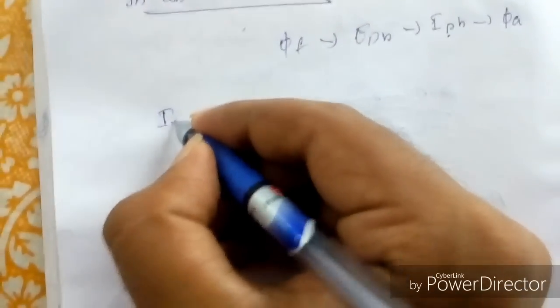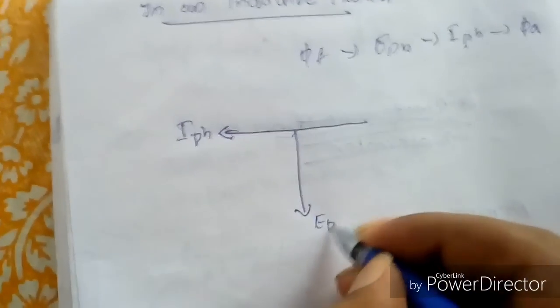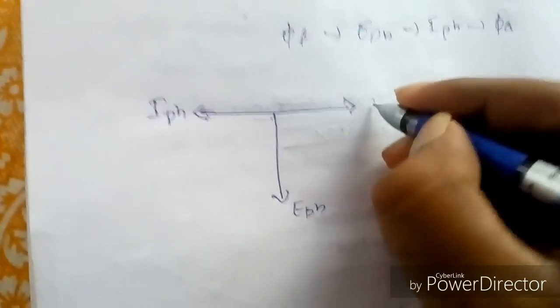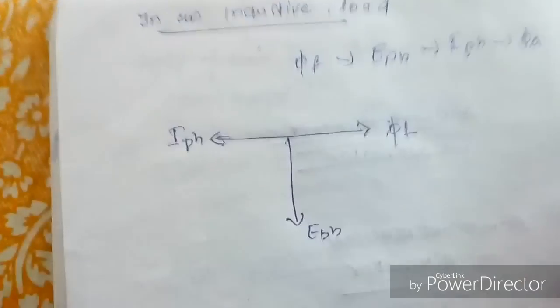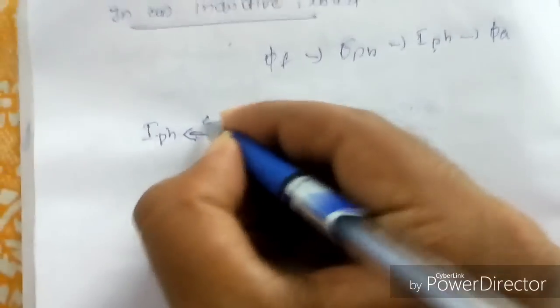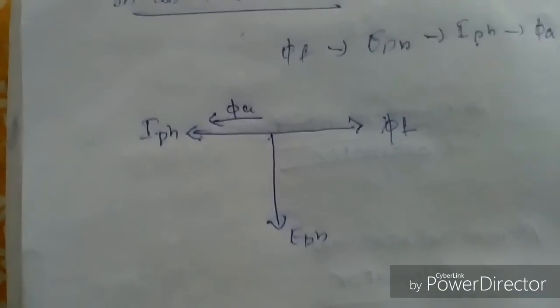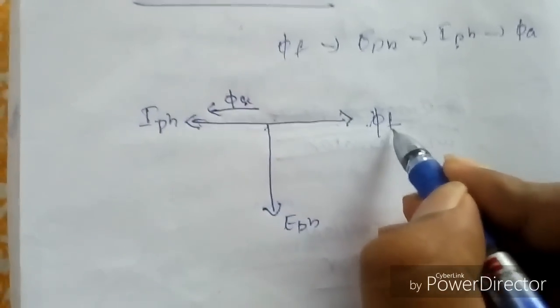So the phasor diagram will look like this. This is phi F. The armature flux will always be in phase with the current. Now you can see that phi A is exactly 180 degrees out of phase with the field flux. And now we can see the flux waveforms. There is a north pole and a south pole. This is phi A, and I will show phi F like this — it is 180 degrees out of phase.